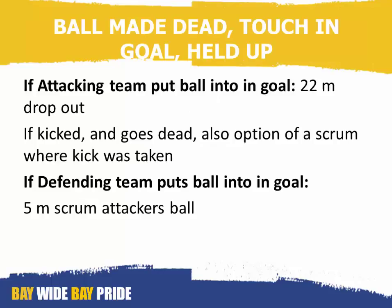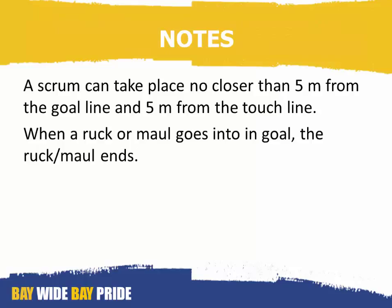If an attacking team puts the ball into in goal and it is kicked and goes dead, a 22-meter dropout is awarded. The defending team also have the option of a scrum where the kick was taken from. If a defending team puts the ball into in goal and the ball is made dead, touch-in-goal, or held up, it's a five-meter scrum — attacker's ball. Note: a scrum can take place no closer than five meters from the goal line and five meters from the touch line.